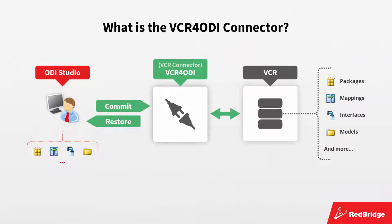The second component is the VCR4ODI connector. It ensures the link between ODI, your development environment, and Subversion, the version control repository. It allows you to version packages, mappings, interfaces, models, and other components. Later on, you can restore them back from the VCR into ODI.